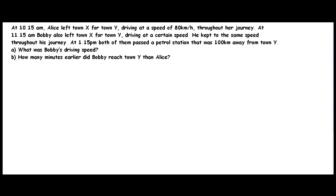Hello, this is a question for Primary 6 on speed and time. At 10.15am, Alice left town X for town Y, driving at a speed of 80 kmph. At 11.15am, Bobby also left town X for town Y, driving at a certain speed. He kept to the same speed throughout his journey. At 1.15pm, both of them passed a patrol station that was 100 km away from town Y. What was Bobby's driving speed? How many minutes earlier did Bobby reach town Y than Alice?